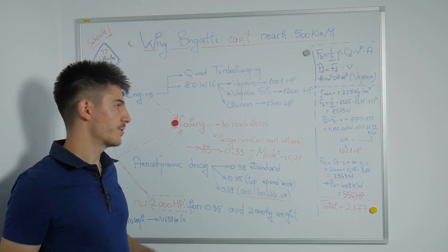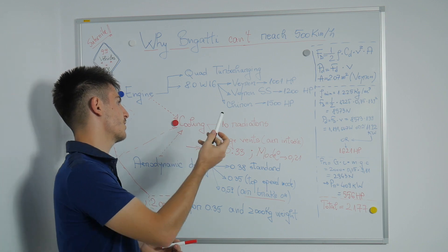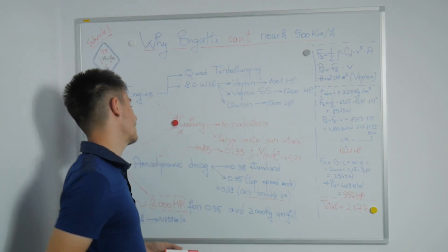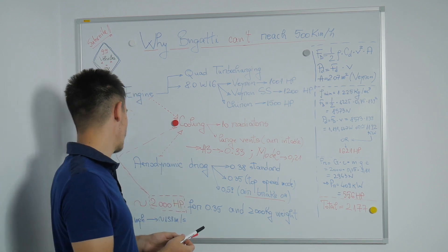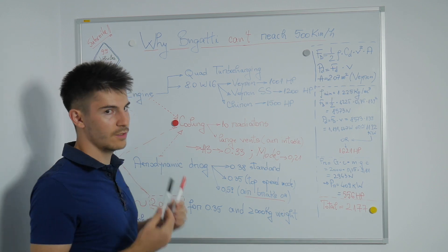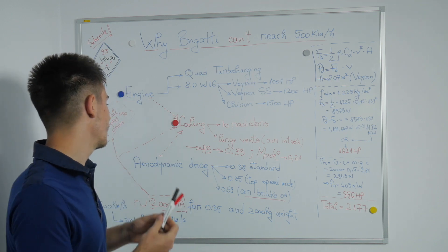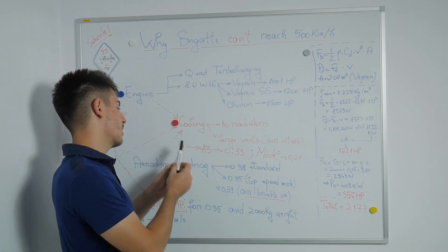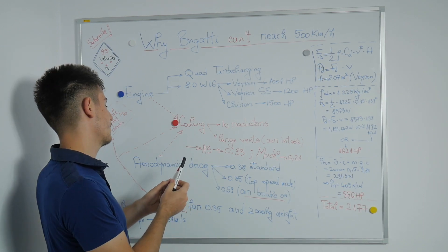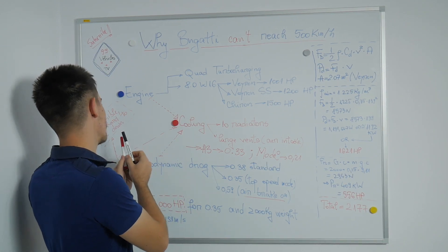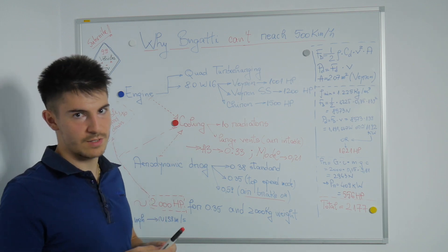So it's a huge challenge for engineers to come up with an engine version for the 8-liter W16 engine to have over 2,000 horsepower so it could surpass 500 kilometers per hour, because cooling is a big issue, aerodynamic drag is a big issue, and just giving the future clients warranty is a big issue as well.